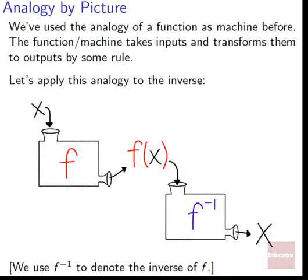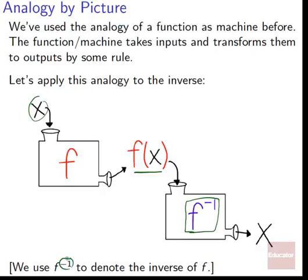We've used the analogy of a function as a machine before, and it's a good image for inverse functions as well. A function machine takes inputs and transforms them to outputs by some rule — we plug in x into function f and it spits out f(x). Now we can plug that into an inverse machine, an inverse to f, called f inverse, denoted by f with a negative one in the upper right corner. If we plug f(x) into f inverse, we get right back to our original x, as if we hadn't done anything.